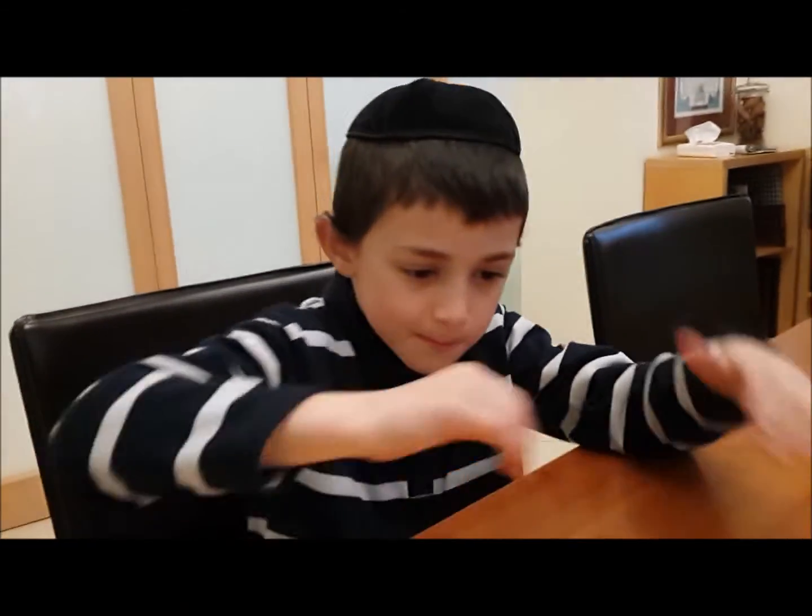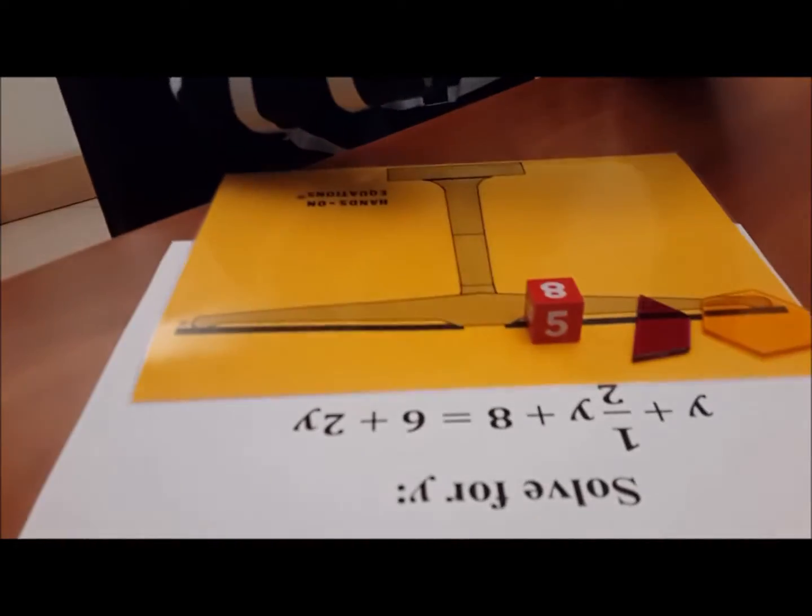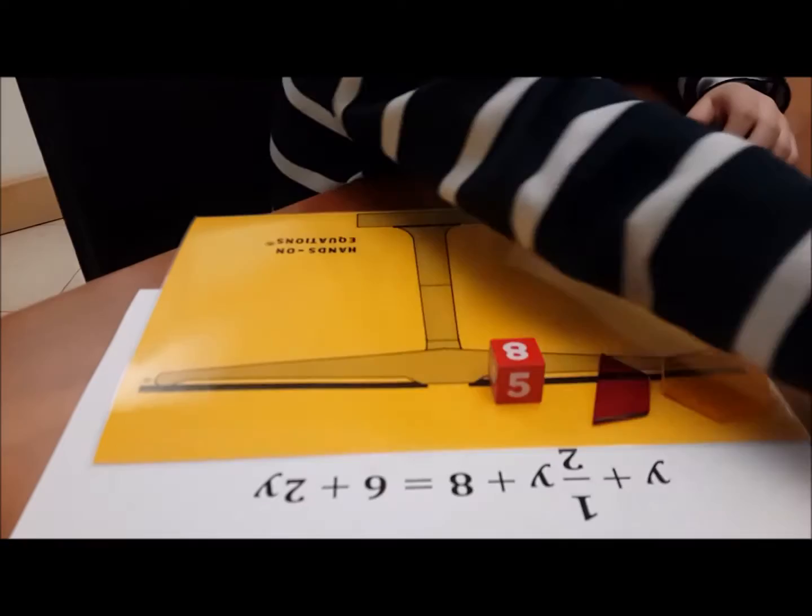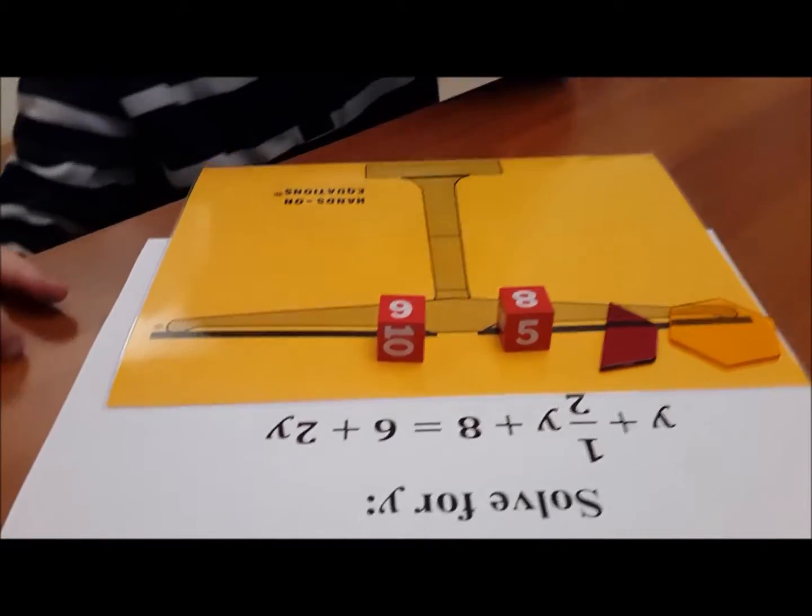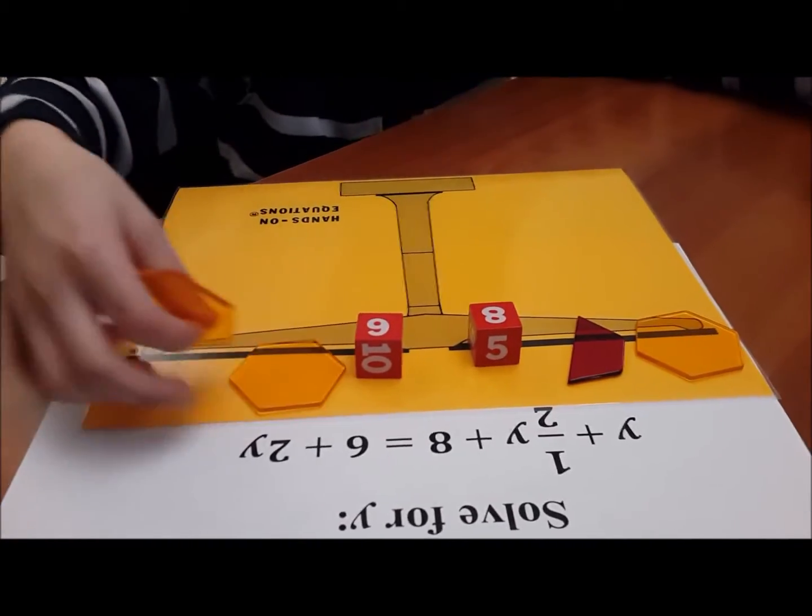Now we have to go to the other side of the equation. So let's see what we're going to do here. What do we need here? We've got to find the right cube. What else do we need? Good.